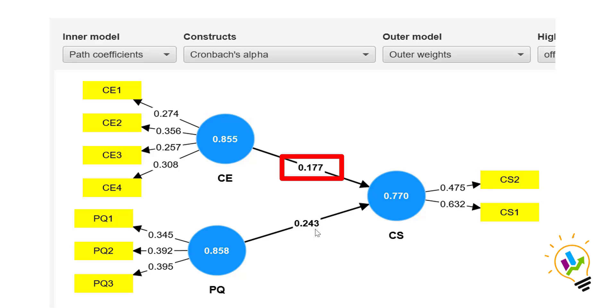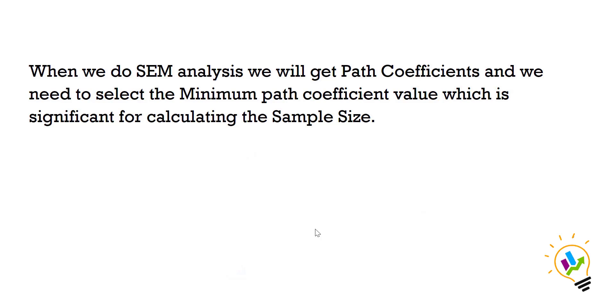Basing on the minimum path coefficient value, we can estimate how much is the minimum sample size required for this model. I'll show you a very simple formula. Using this simple formula we can come to an estimation of the sample size. In this case, we will take the minimum path coefficient which is 0.177.